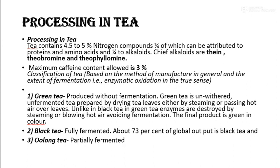Processing in tea: tea contains 4.5 to 5% of nitrogen compounds, three-fourths of which can be attributed to the proteins and amino acids and one-fourth to alkaloids. The chief alkaloids are theine, theobromine, and theophylline.